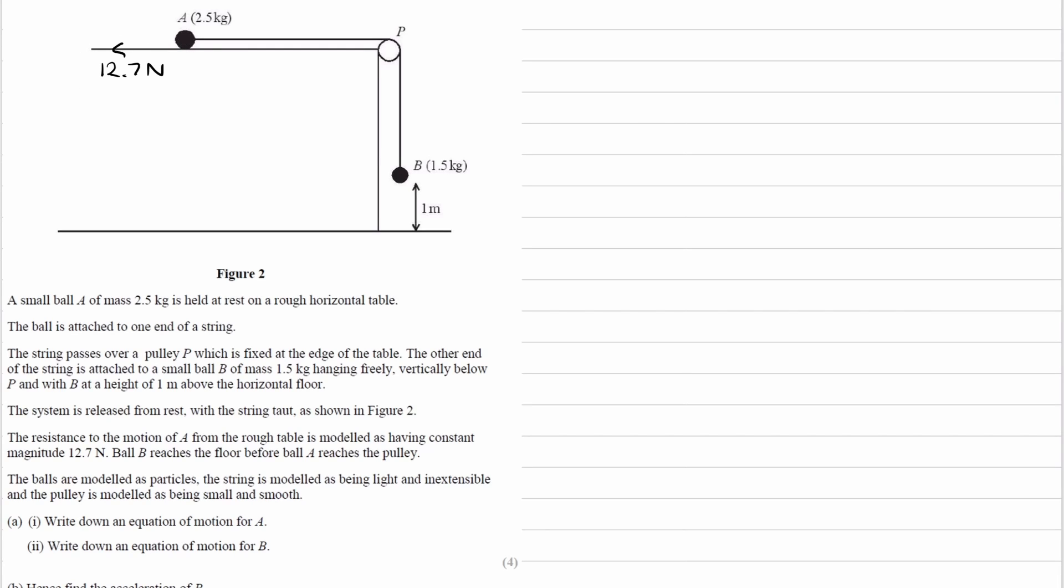B has a weight force of 1.5g, and A will have a weight force of 2.5g, but I'm not going to bother drawing that because we're only going to be considering the horizontal forces on A. The other horizontal force on A would be tension, so T, the string pulls it towards the right, and similarly for B, the tension force will be upwards, the string pulls it up.